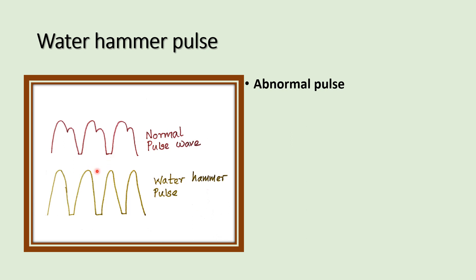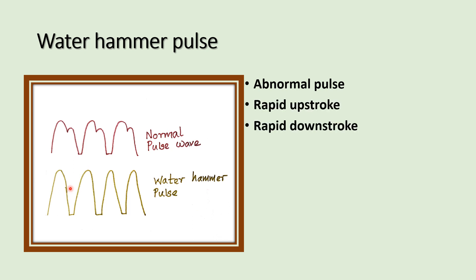In the water hammer pulse, there is a rapid upstroke and a rapid downstroke with no dicrotic notch. A brisk upstroke and a brisk downstroke are seen in the water hammer pulse.